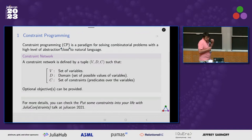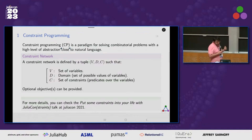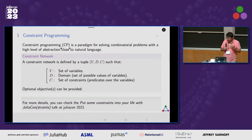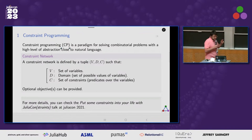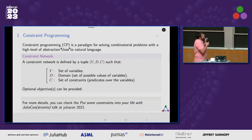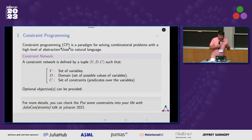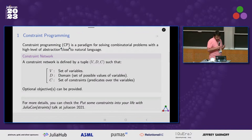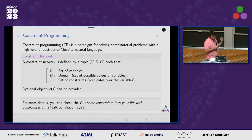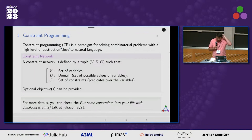The idea is that we can model problems with a high level of abstraction that is close to natural language. For that we define a set of variables, usually discrete. We have a set of domains over the variables and we have a collection of constraints — predicates over the variables. Optionally we can have objectives that can be provided. If you want to know a bit more, we had a talk about this two years ago at JuliaCon.